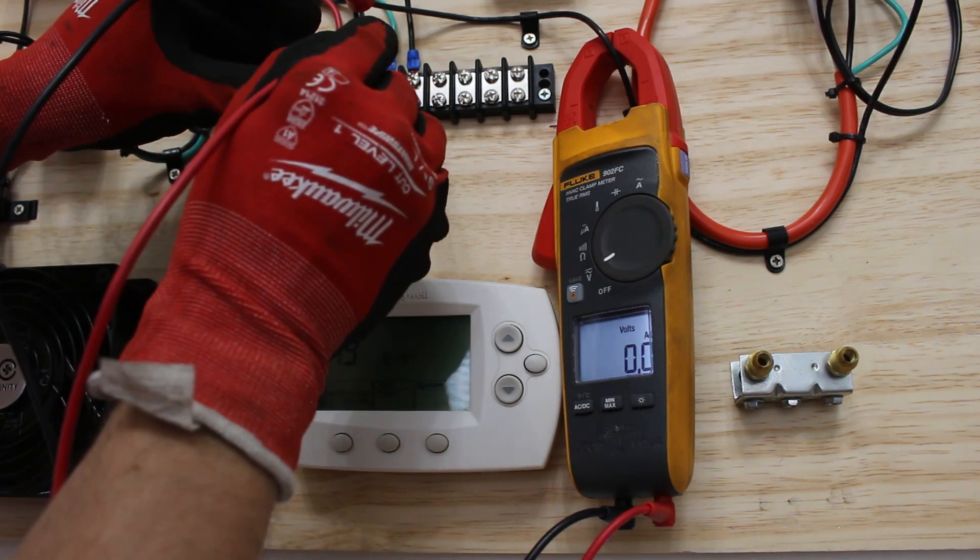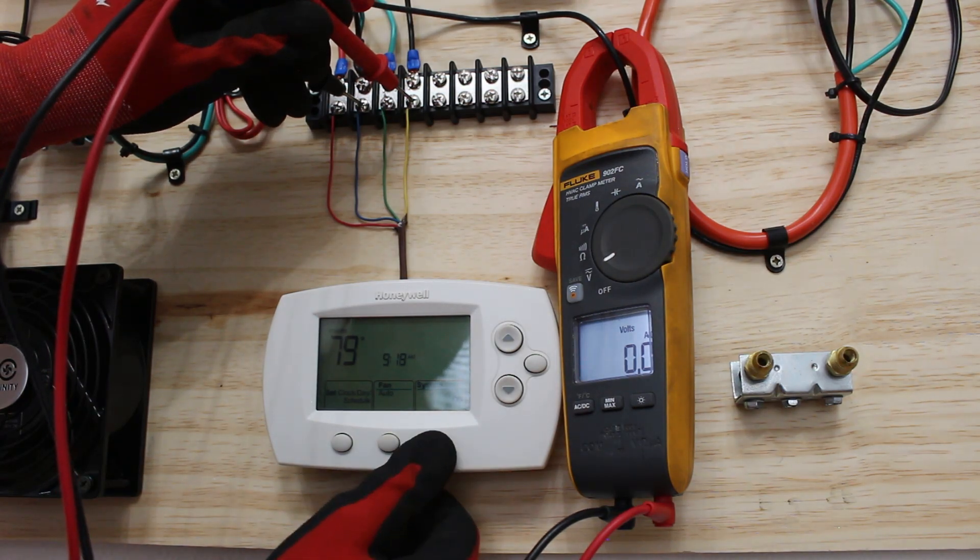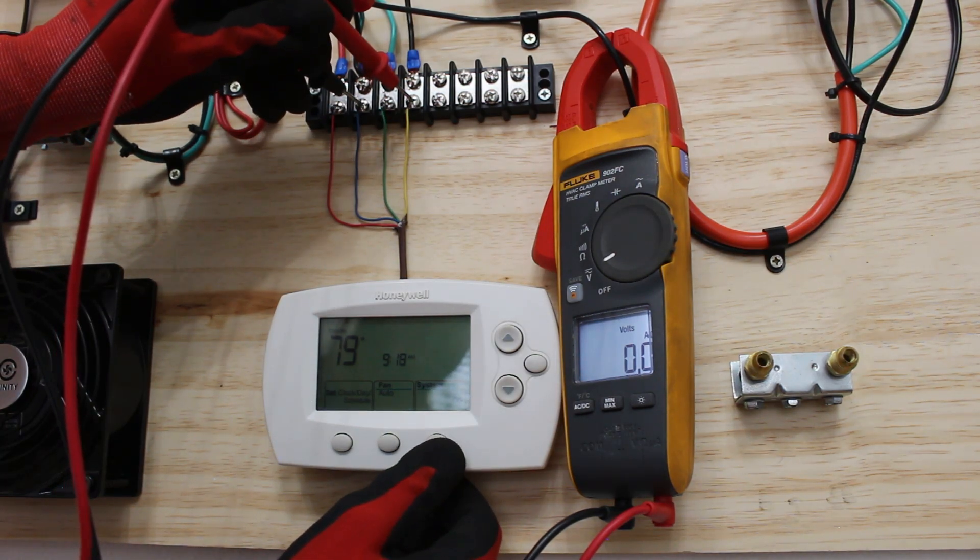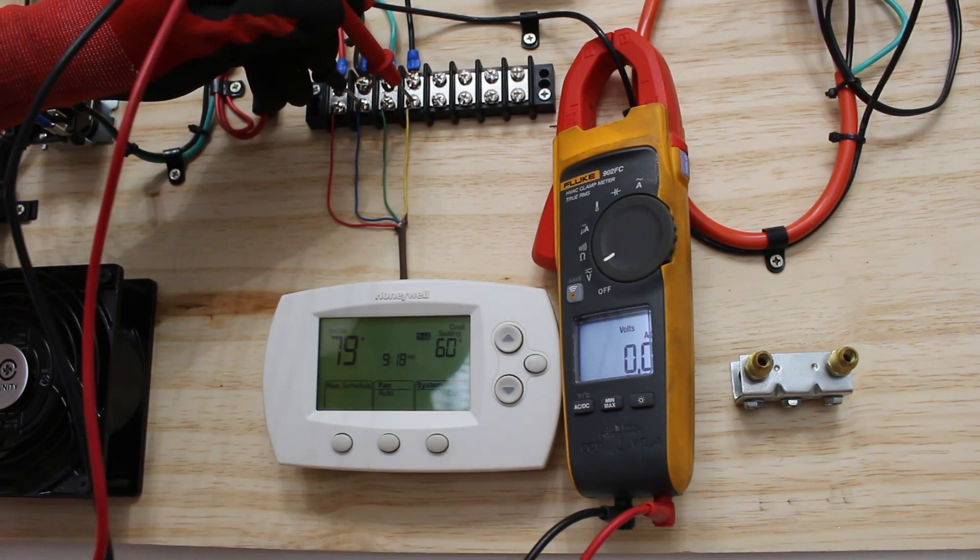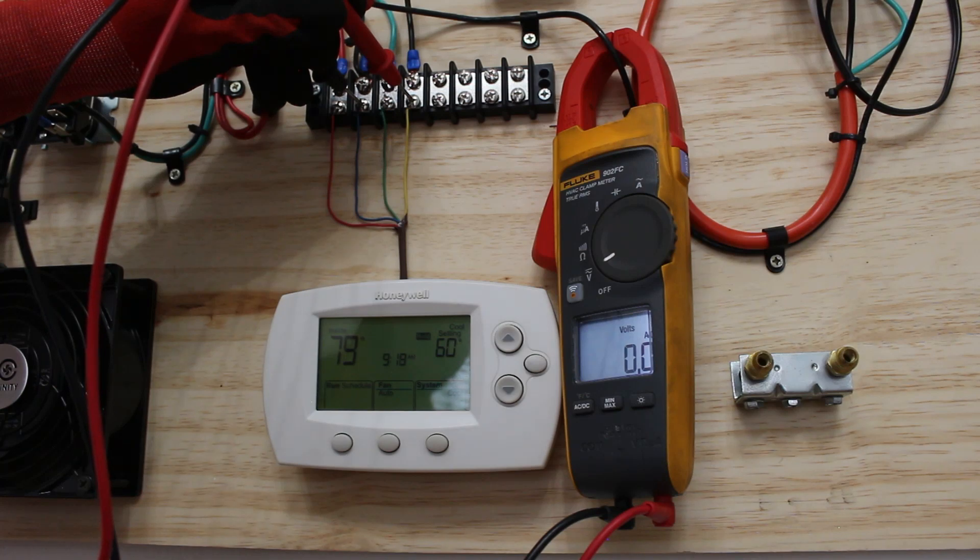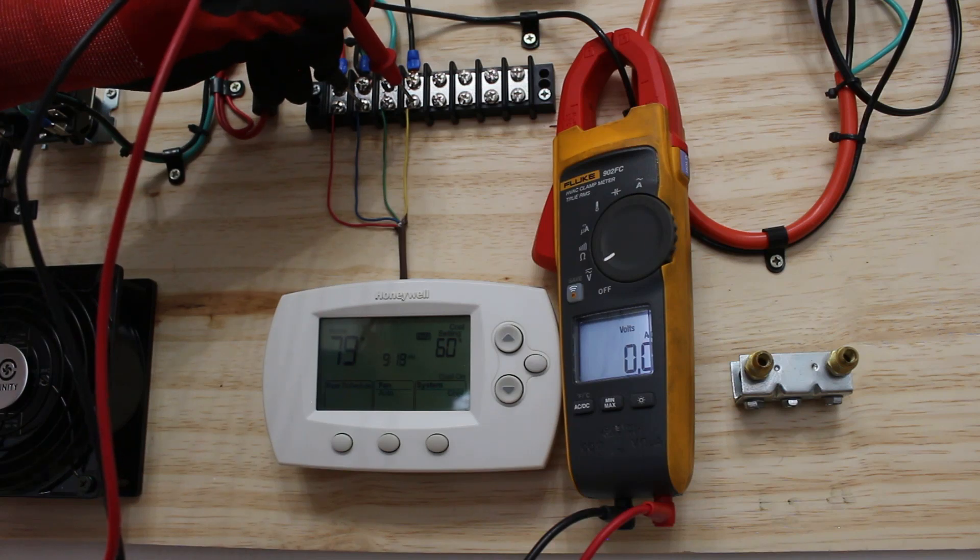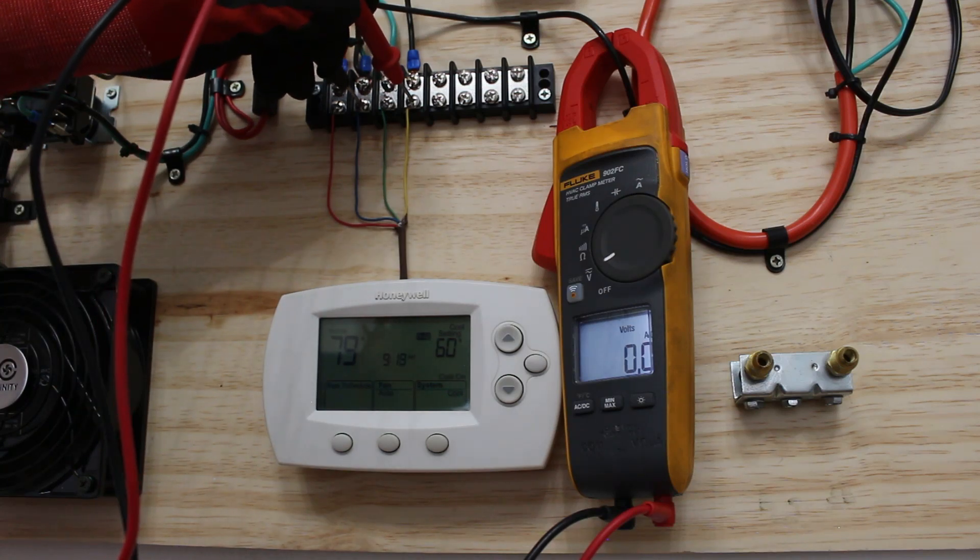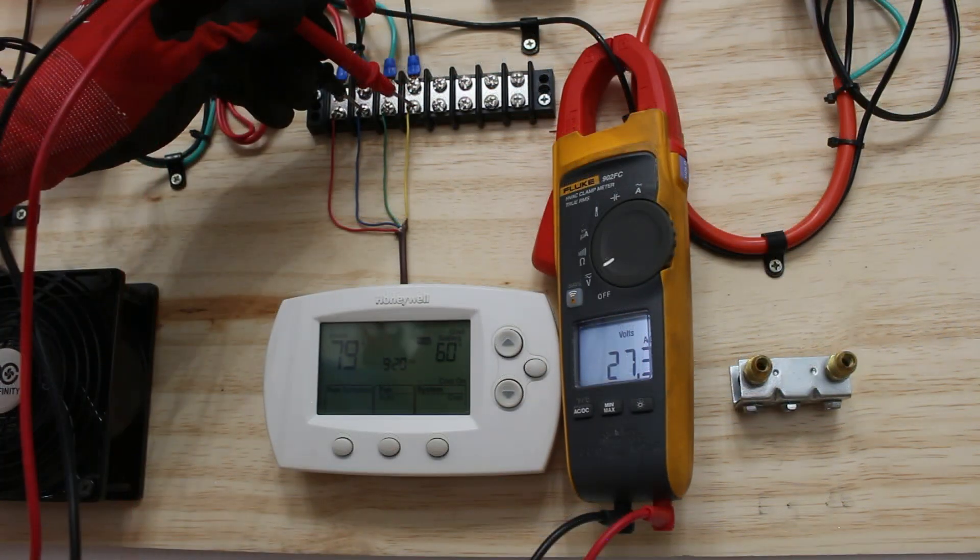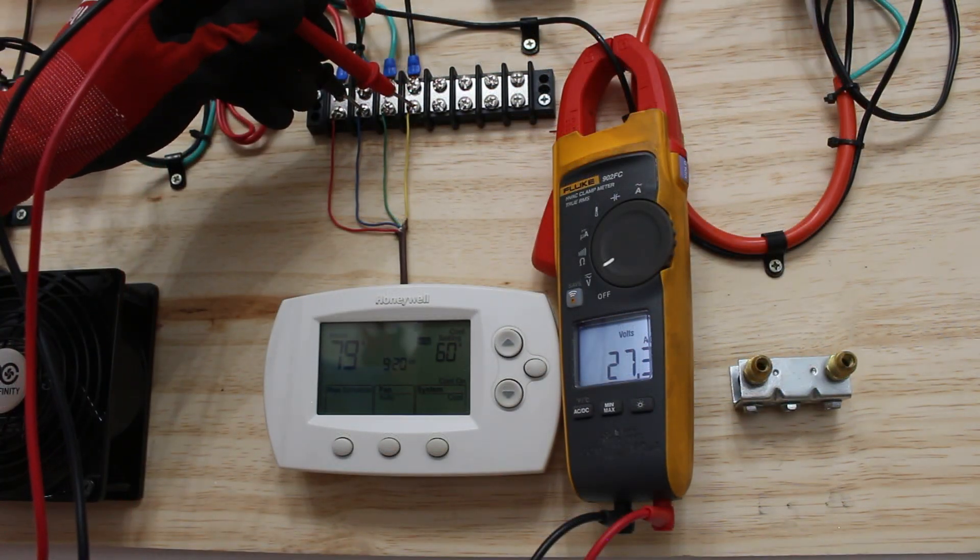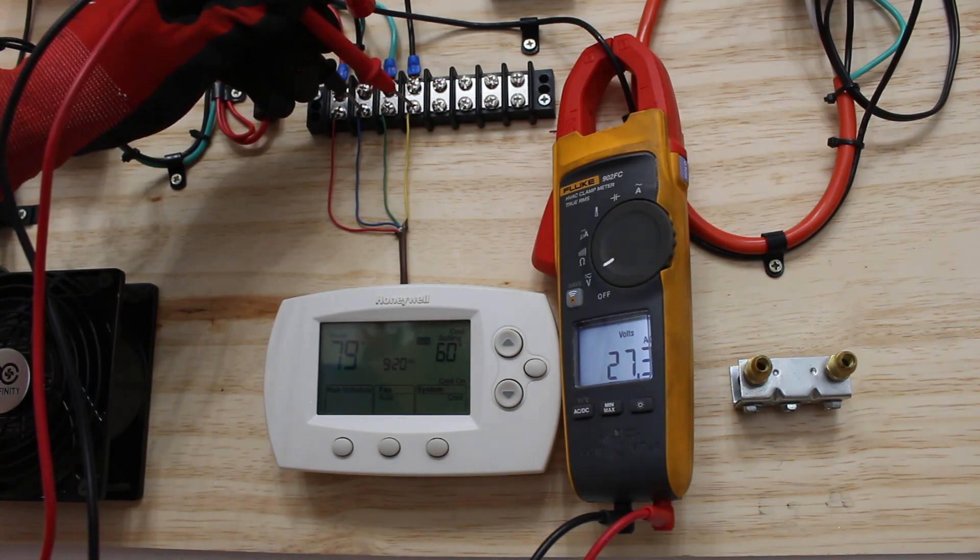Now we're going to go from common to cooling and let's see what happens on the Y wire. Right now we have between common and Y zero volts. If we put the system on cool, once again we have a delay. At the moment we have zero volts but once this kicks in between C and Y you will see there will be 24 volts. Our cooling operation has begun and as you can see between C and Y we now have voltage.